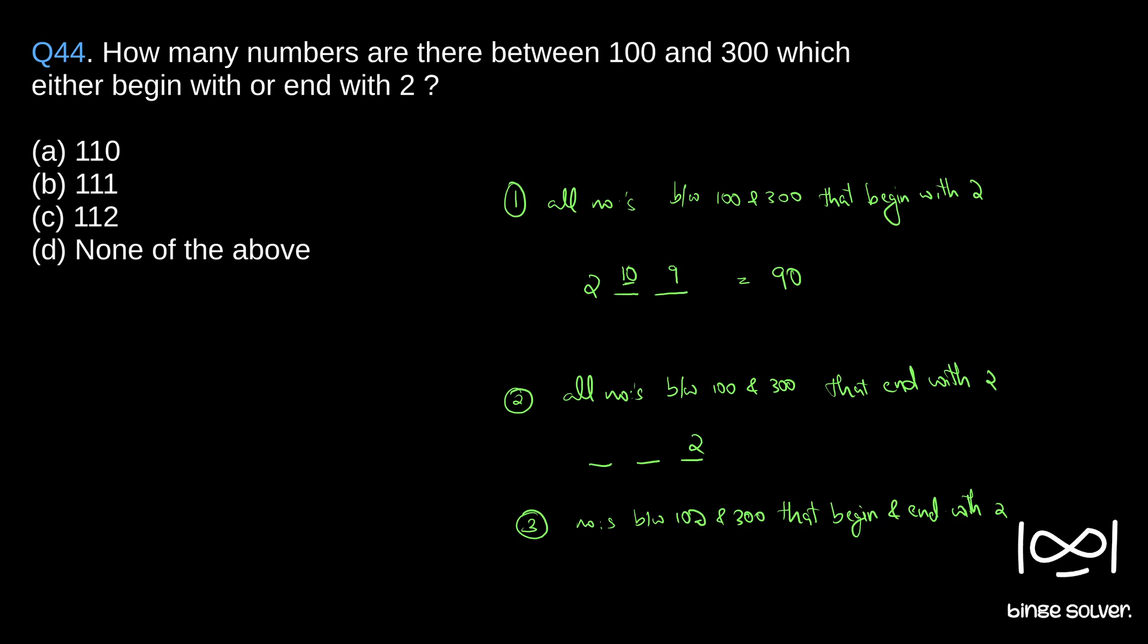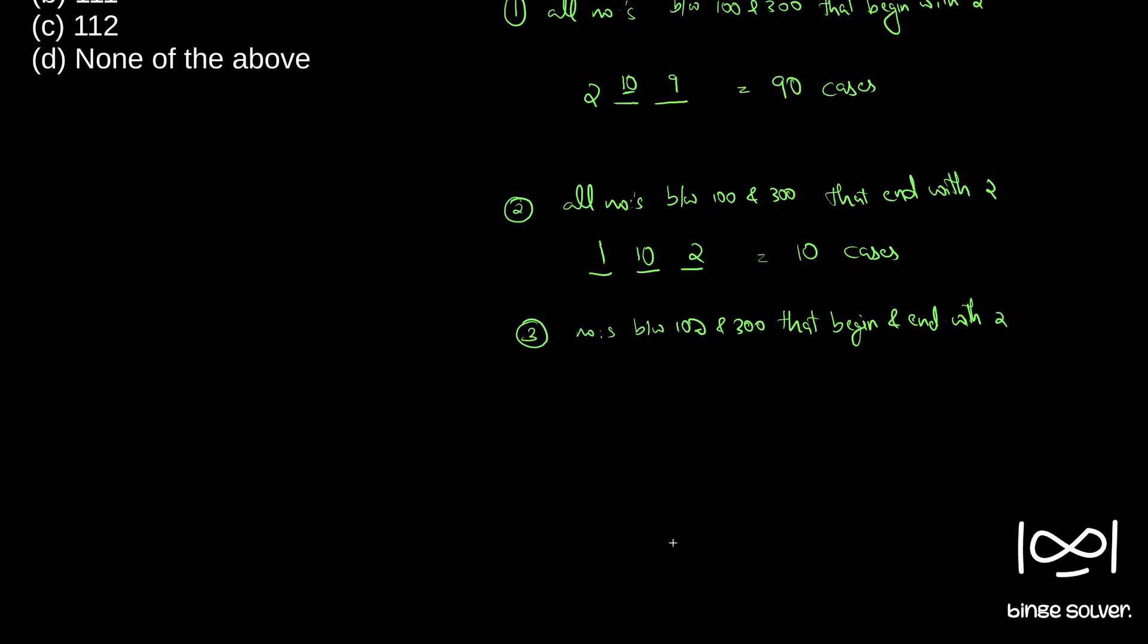So only one digit, so one case. Now here all 10 digits can come, starting with 1 and ending with 2. So all 10 cases, 0 to 9 can come, so 10 digits. So total 1 times 10 equals 10 cases. Now we'll see numbers between 100 and 300 that begin and end with 2.